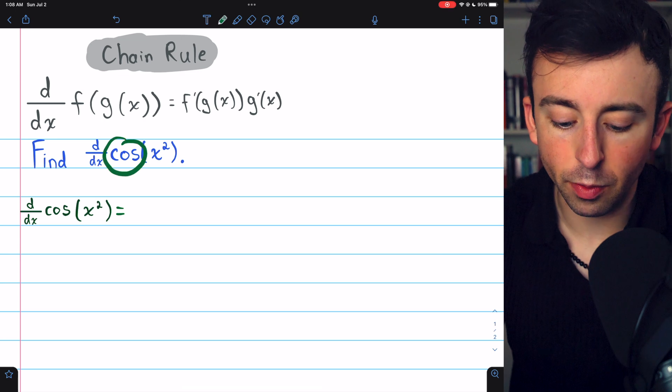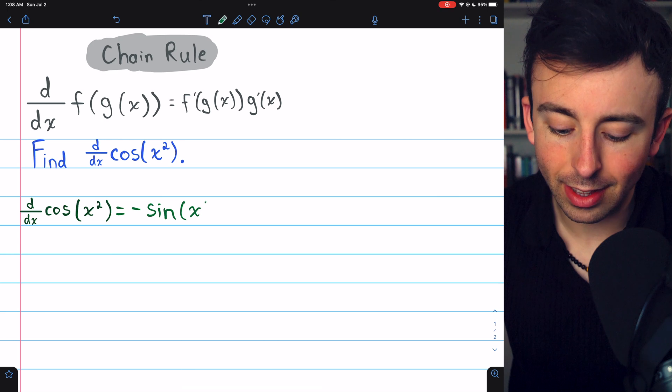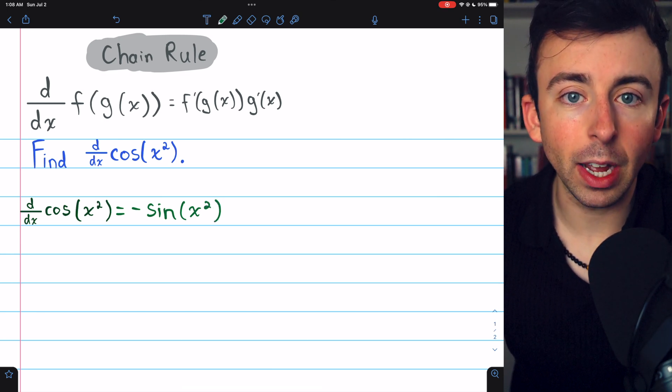The derivative of the outside function, cosine, is negative sine. Again, we leave g of x, the inside function, unchanged, so it's negative sine of x squared.